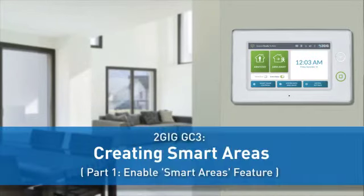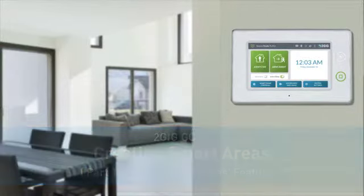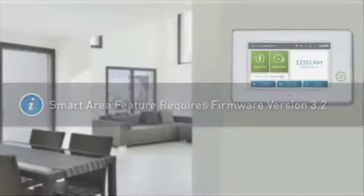The following video will demonstrate how to activate the Smart Area feature on a 2GIG GC3 security panel. The panel must have firmware version 3.2 in order to use the Smart Area feature.